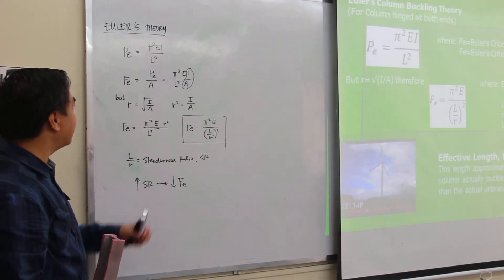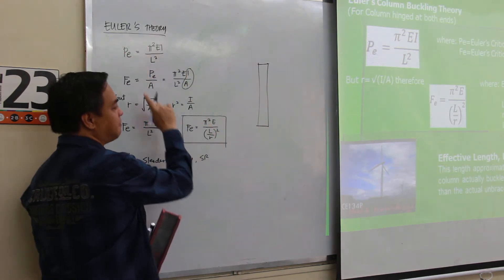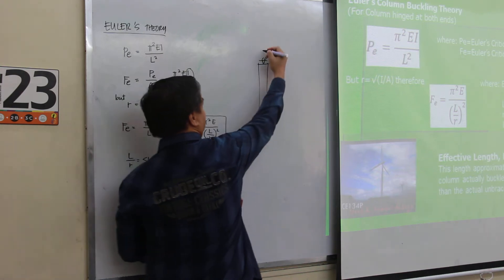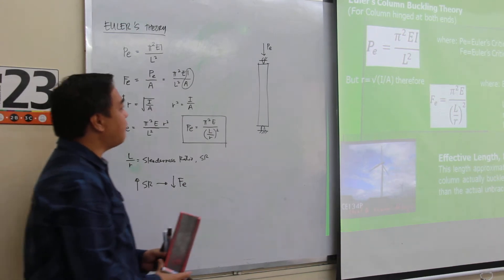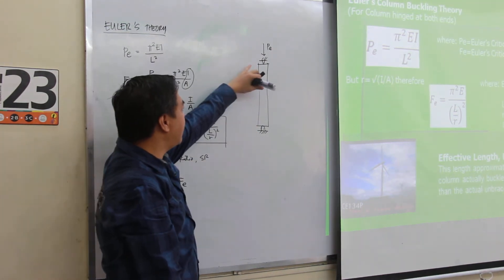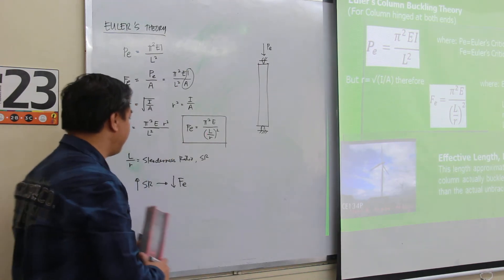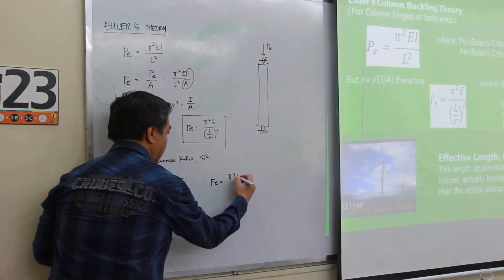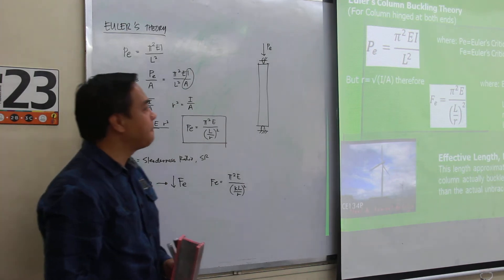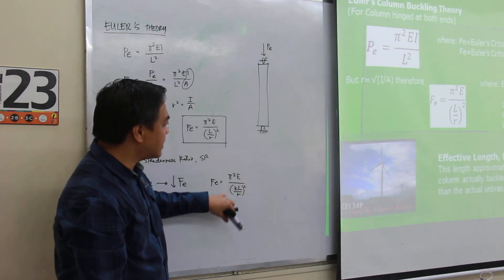But this L, let's say for this compression member, let's say I have this member. The Euler's theory is based on the assumption that the member is assumed to be hinged at both ends. So this would be the critical load. Now, what if we vary the condition of supports? Let's say I'll change the support from hinge into a fixed support. So what if I'll make this a free end? So what would be the variations in the Euler's stress? So instead of L over r, the equation will now become pi squared E. Let me introduce to you the K. The K times L over r, where this K is known as the effective length factor. So if I multiply that original length with an effective length factor, the product is known as the effective length.